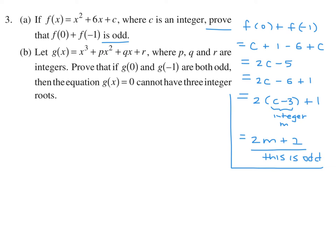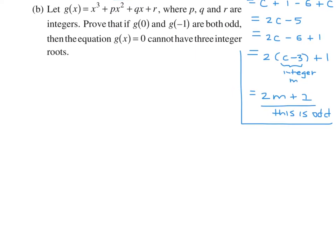Part B: Let g(x) equal x cubed plus px squared plus qx plus r, where p, q, r are integers. Prove that if g(0) and g(−1) are both odd, then g(x) equals 0 cannot have three integer roots. We assume for contradiction that g(x) has three integer roots a, b, c, so g(x) equals (x−a)(x−b)(x−c).